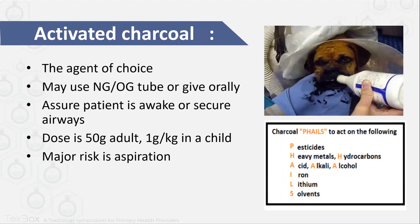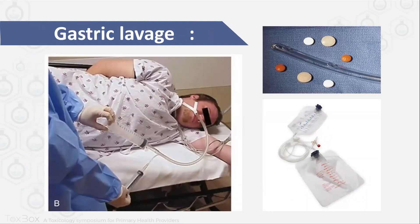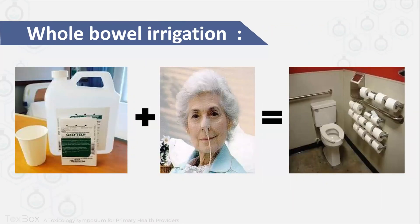For activated charcoal, you need to weigh benefit versus risk and consider whether the agent actually binds to activated charcoal — some agents, as shown in the box on the right, do not bind. You must secure the airway first; if your patient is altered, intubate before giving it to avoid aspiration. Don't force it — you can mix it with juice, cola, or another alternative, especially for the pediatric age group. Gastric lavage and whole bowel irrigation are rarely indicated, only in massive life-threatening ingestions, and should not be done in a primary healthcare setting.